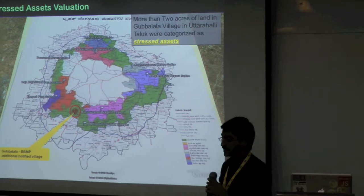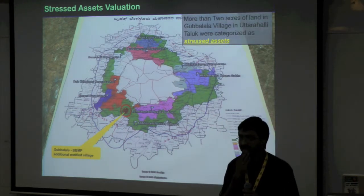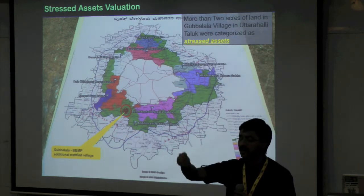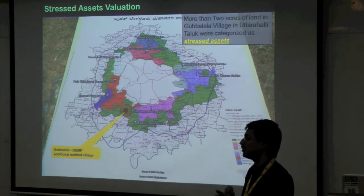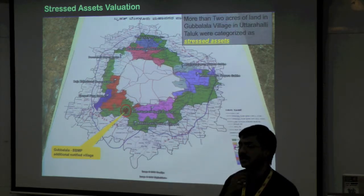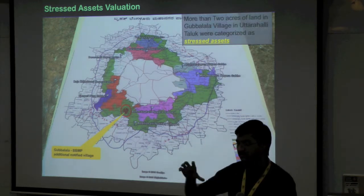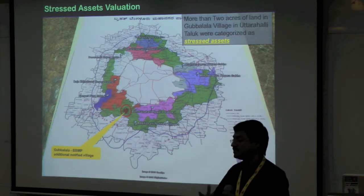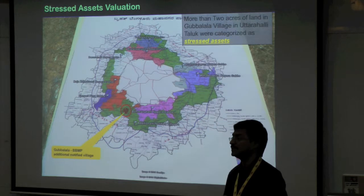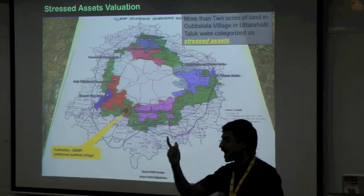One of the interesting things I did was: there is this technology platform available — what do I do with that? I went the regular path, going to property developers like Puravankara and Prestige. All of them said, well, I can also mark the points on a map, I have all the properties, I can put attributes — so what more can you do? I spent about three, four months running around that process and realized there should be some other segment in the market as a recipient of these services. When I went to a bank and spoke to the stressed assets department, the chief said he had land properties which were stressed assets — people who had taken loans hadn't been able to return them, the bank had taken possession and was planning to sell.